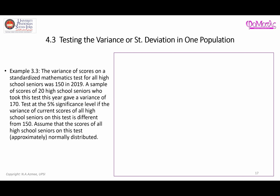In this video I'm going to talk about hypothesis testing for the population variance, and this is an example of a two-sided or two-tailed hypothesis test. The variance of scores on a standardized mathematics test for all high school seniors was 150 in 2019. A sample of scores of 20 high school seniors — so n equals 20 — who took the test this year gives a variance of 170, which is our sample variance s squared.